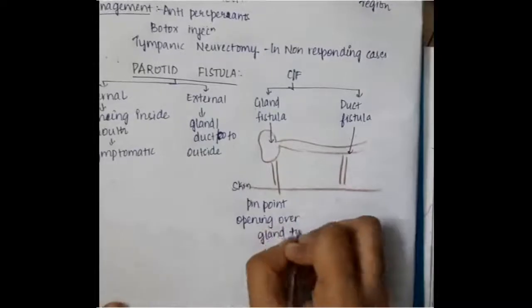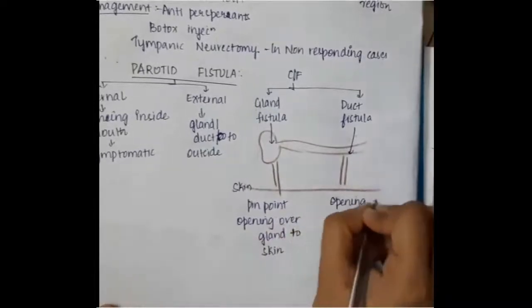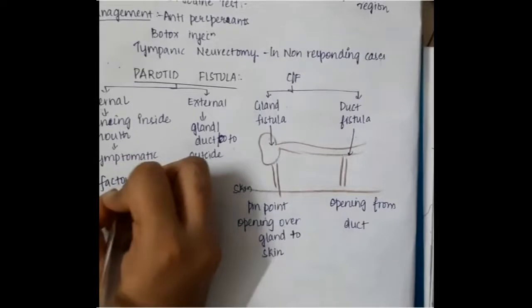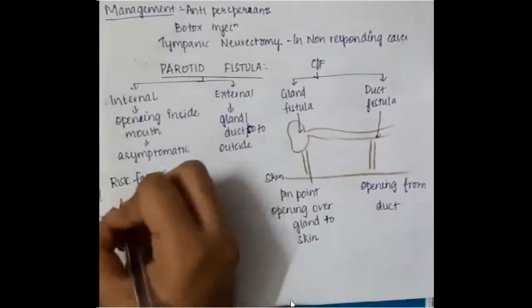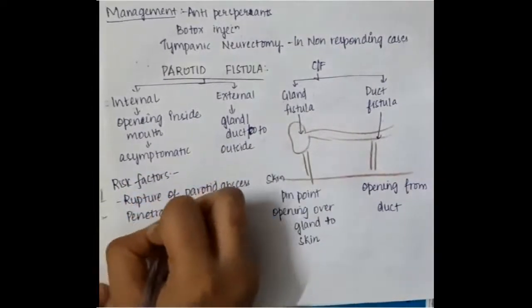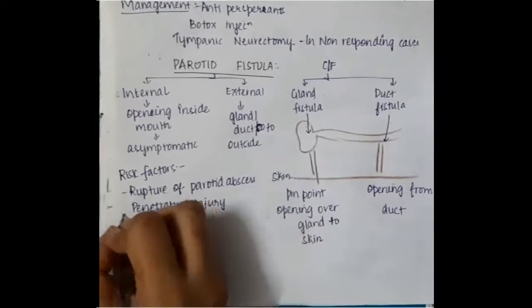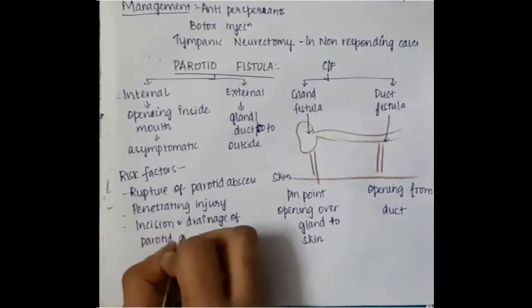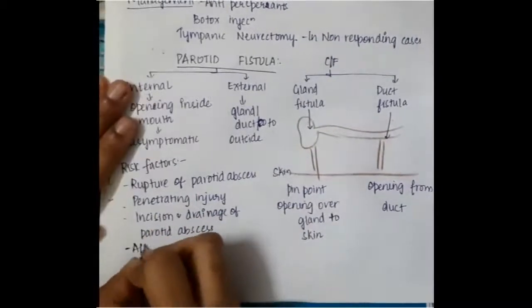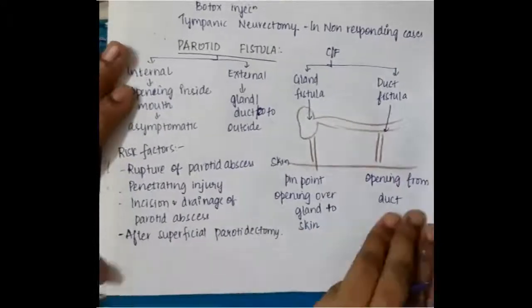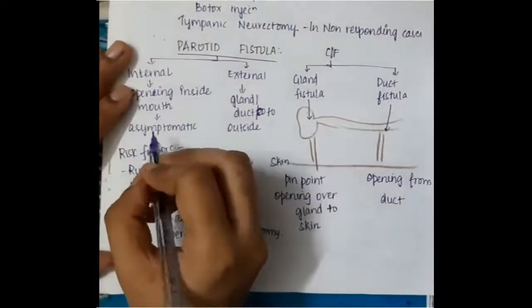In glandular fistula, there is pinpoint opening over the gland to the skin. In the ductal fistula, you will see the opening from the duct. Risk factors include rupture of parotid abscess, penetrating injury. If there is any incision and drainage of the parotid abscess, the tract will be left leading to parotid fistula formation. After superficial parotidectomy, any injury to the duct can lead to parotid fistula.